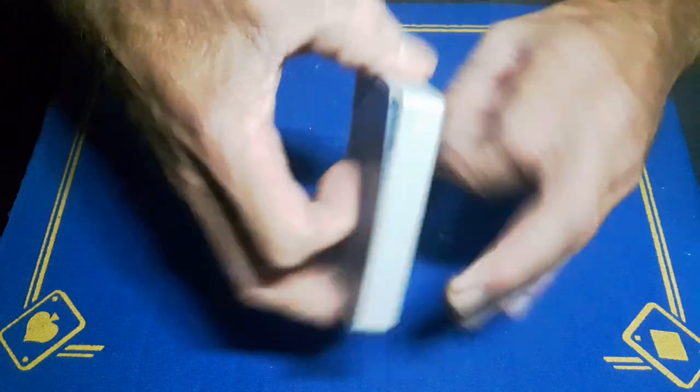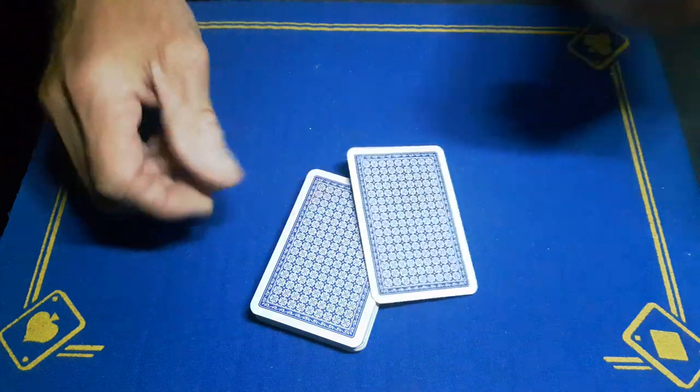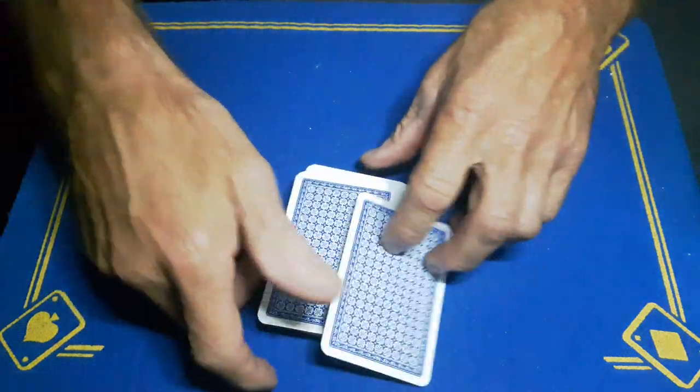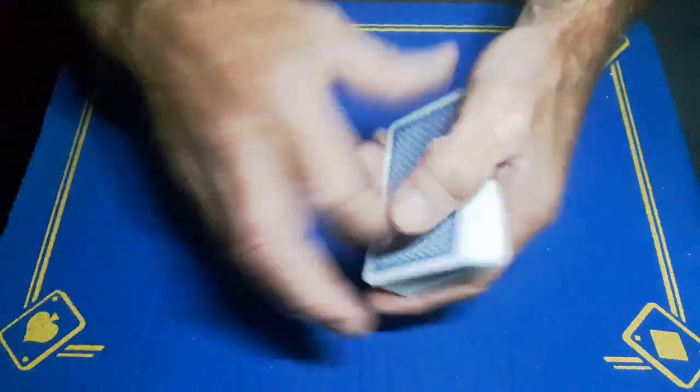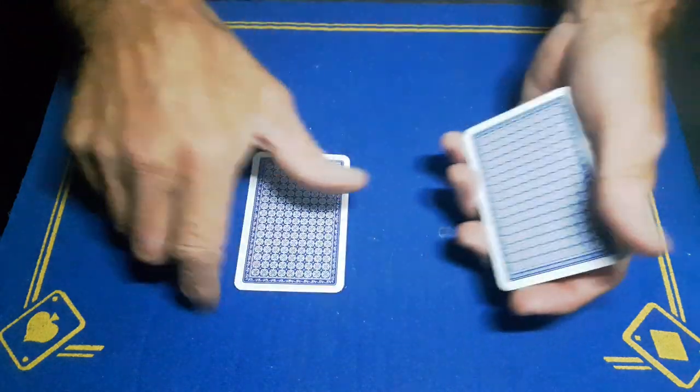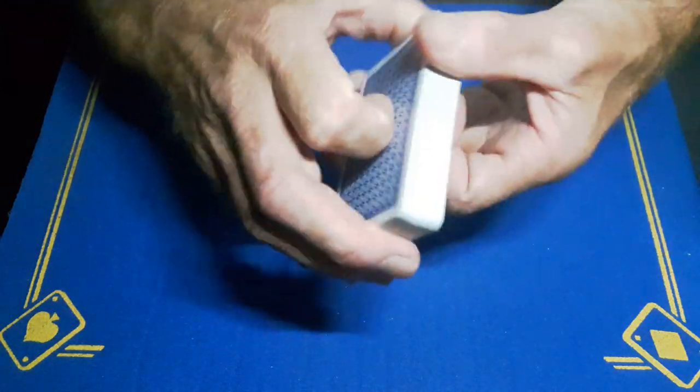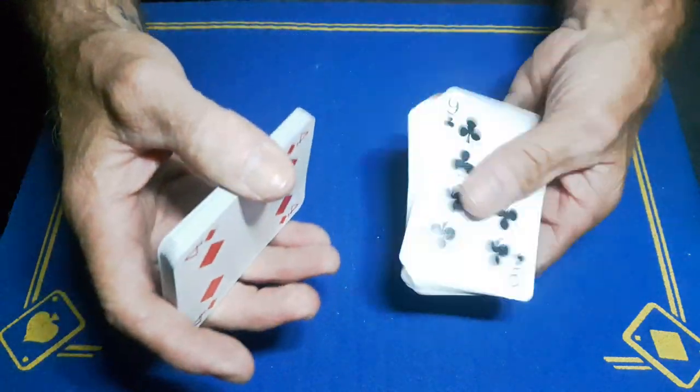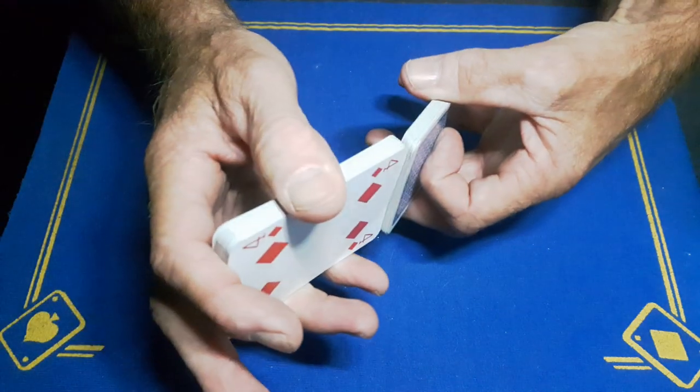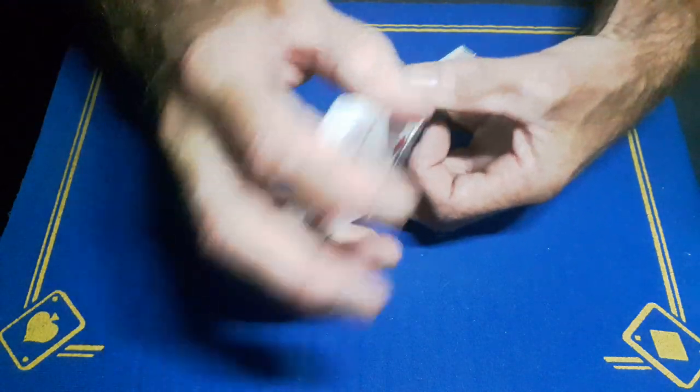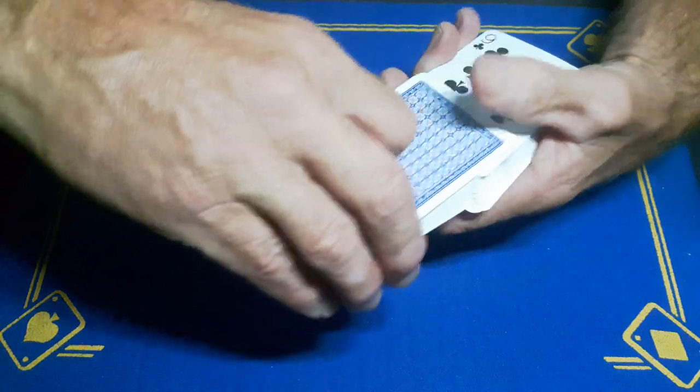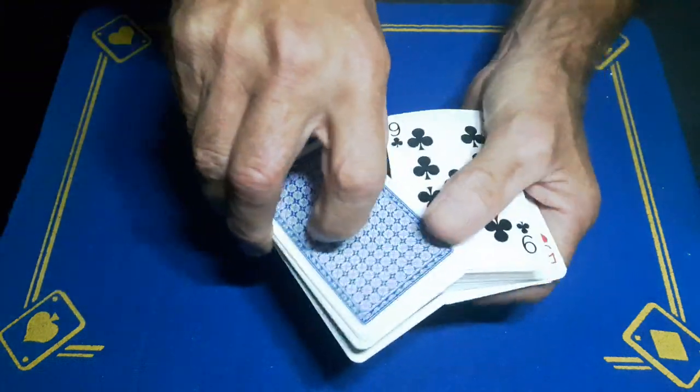But I think with cardistry cards are probably a little bit more flexible, a little bit more pliable. So that's it guys, it's a very simple move. Let's see if I can do it again with some scruffy cards. Push these in, you're going to swing this round.